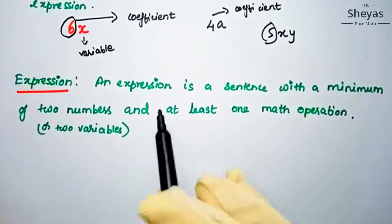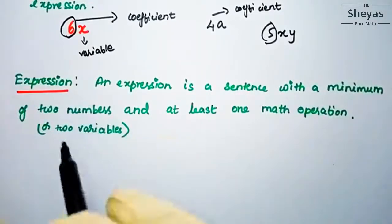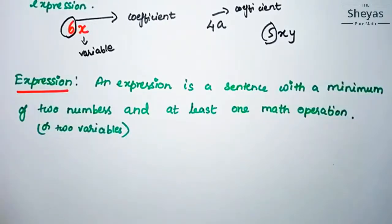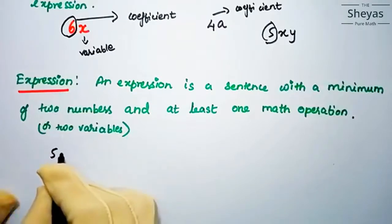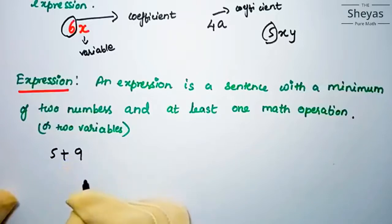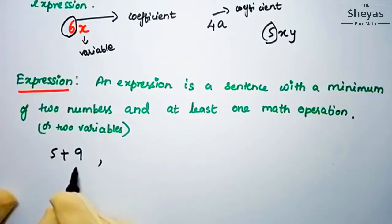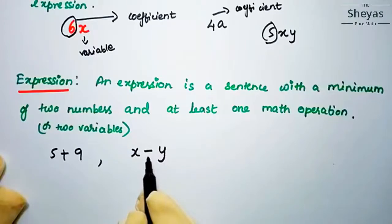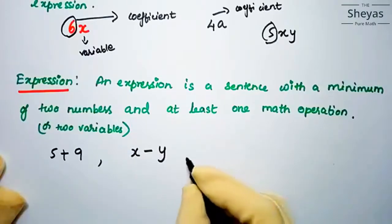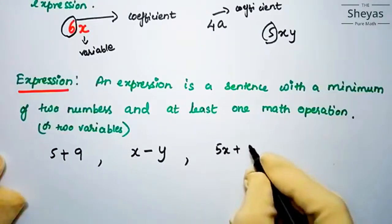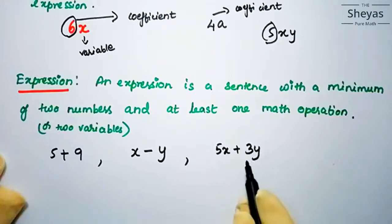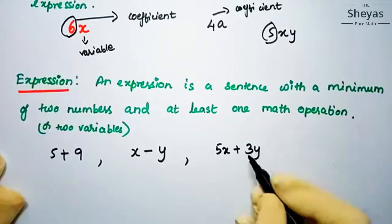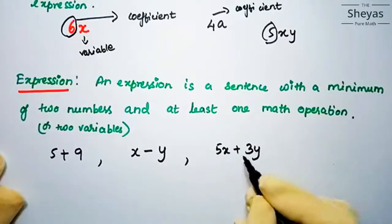The next concept is expression. An expression is a sentence with a minimum of two numbers or two variables and at least one math operation. For example, 5 + 9 is an expression — we have a mathematical operation between two terms. x − y is also an expression. 5x + 3y is another example of an expression — we used the plus operator between two terms.